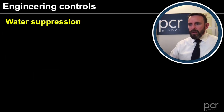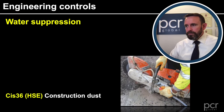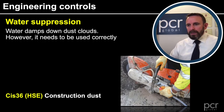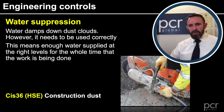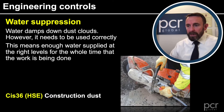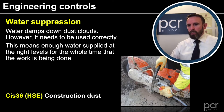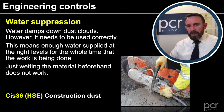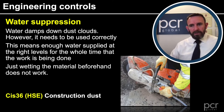Other engineering controls: we have water suppression. As we can see on a cut-off saw, water will damp down the dust clouds; however, it needs to be used correctly. This means we have enough water supplied at the right levels for the whole time that the work is actually being done. If we just wet the material before the work, that will not work.